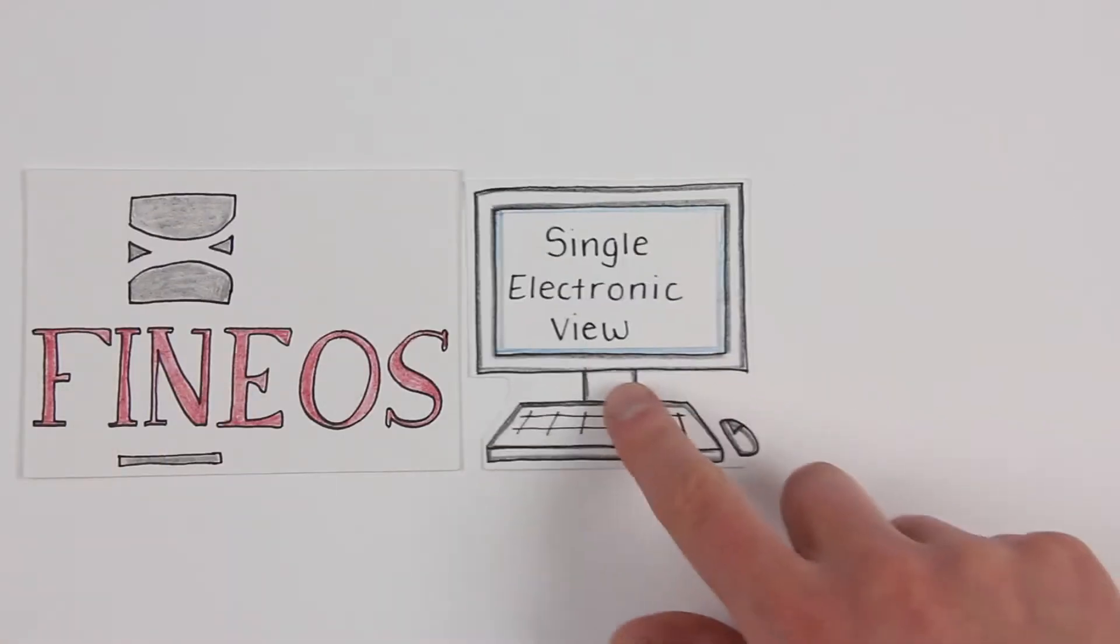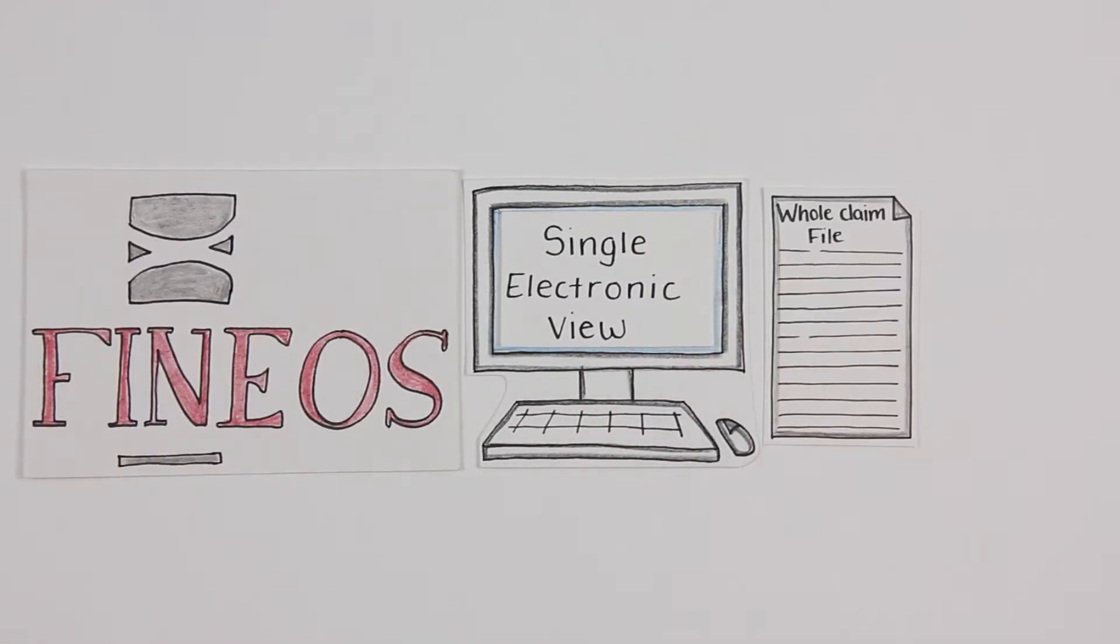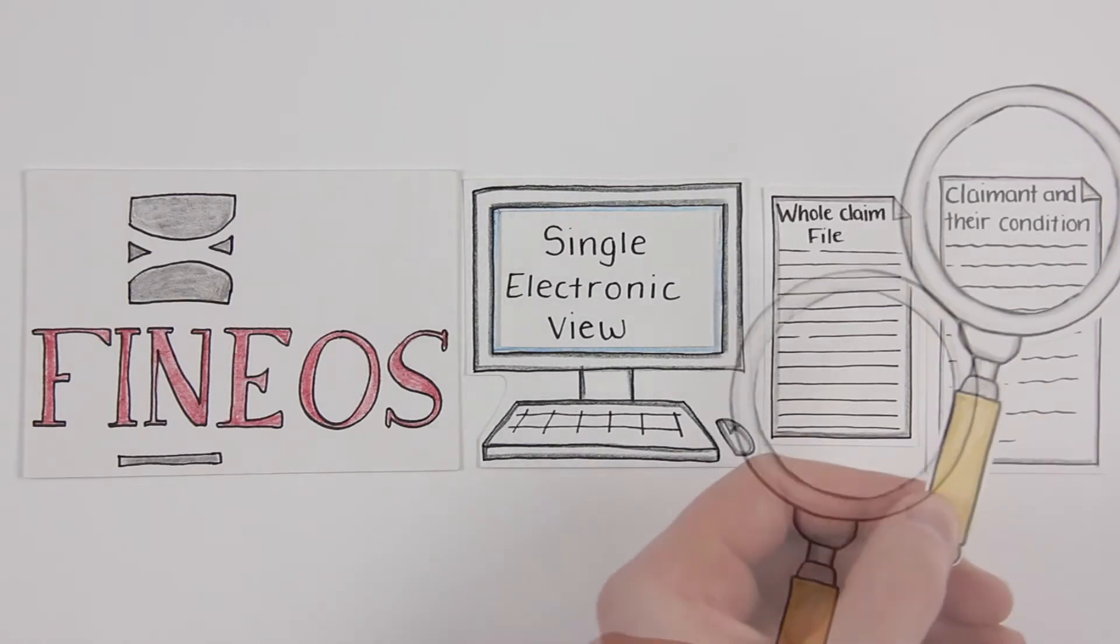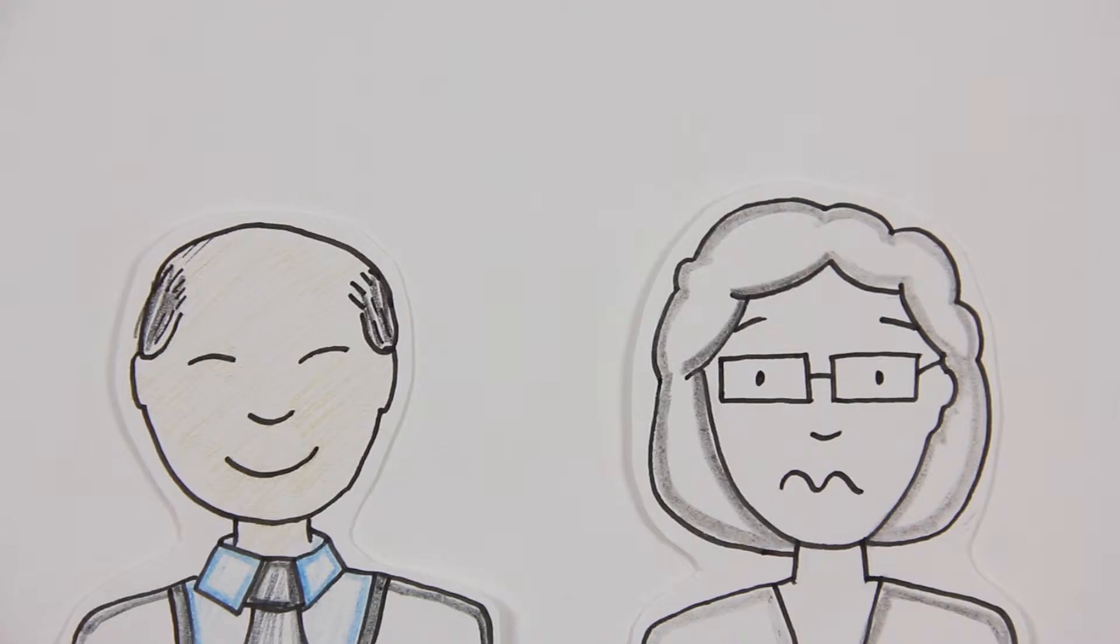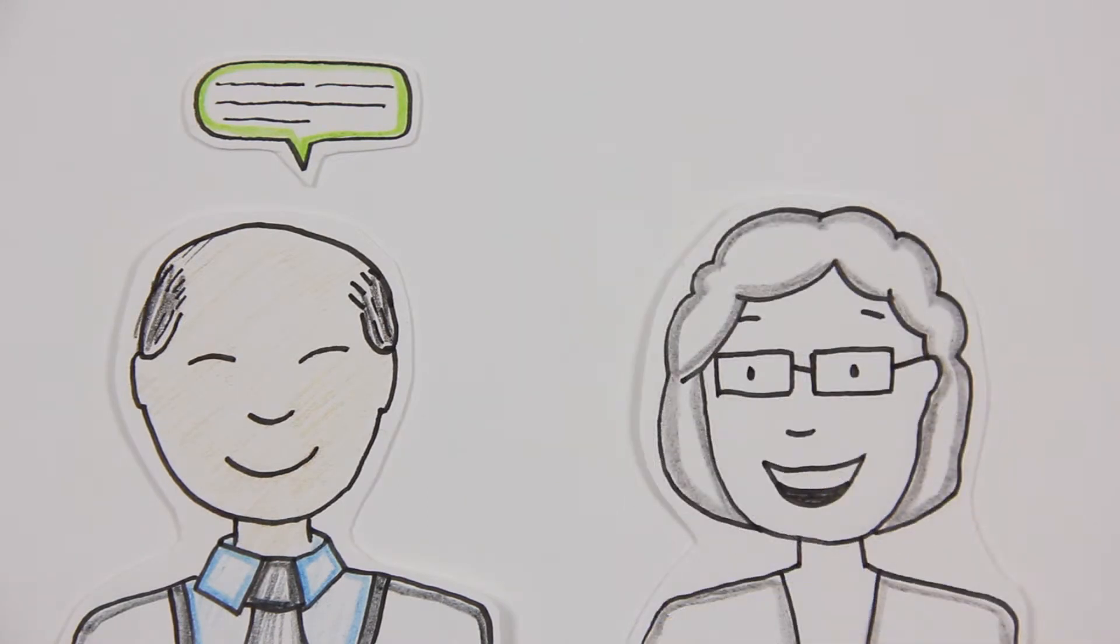With Phineas, you have a single electronic view of the whole claims file so you can quickly see all you need to understand the claimant and their condition and to project manage the case to the best conclusion. By making recommendations and suggestions, you make the claimant feel valued and understood.